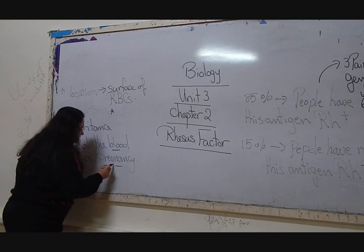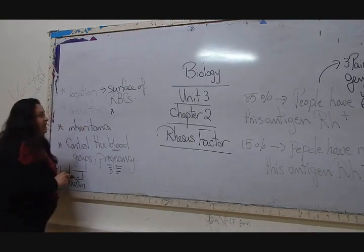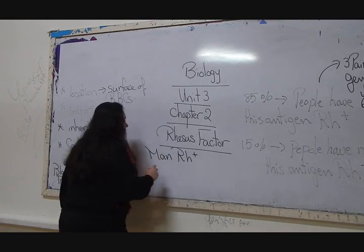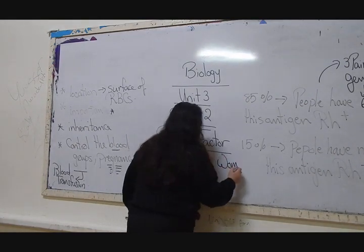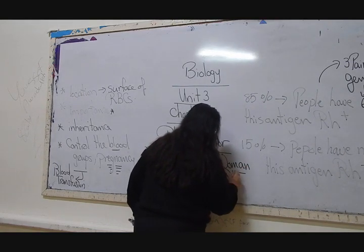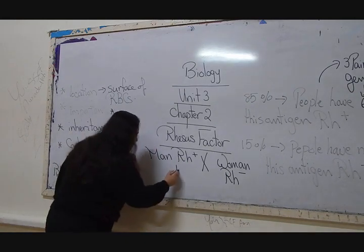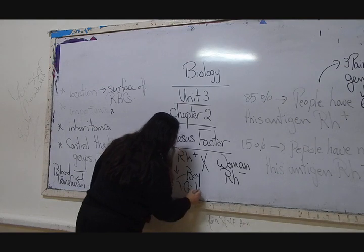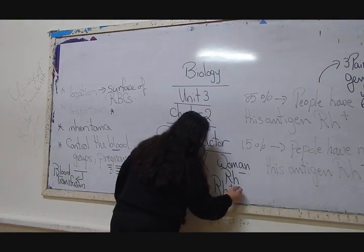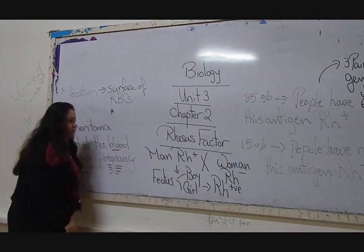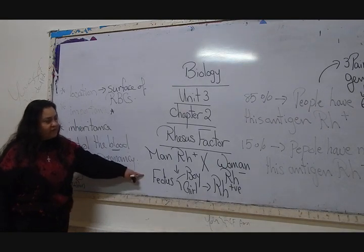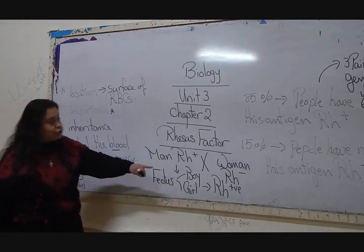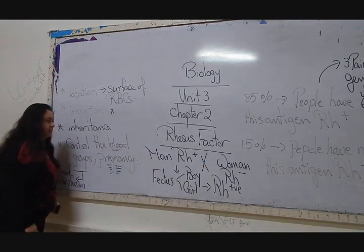Second, we want to know it for pregnancy. Why for pregnancy? If we have a man of RH positive made crossing with a woman who is RH negative, what will be the fetus? If the fetus, if it is boy or girl, will be RH positive like his father. What will happen during the pregnancy for the fetus, for his mother? Nothing will happen. The fetus will be delivered safely and also the woman will not suffer anything.